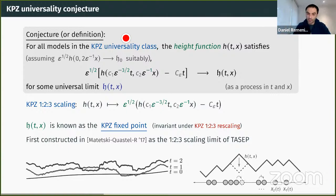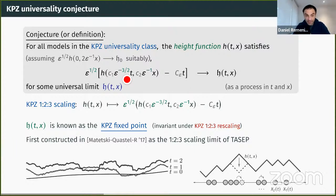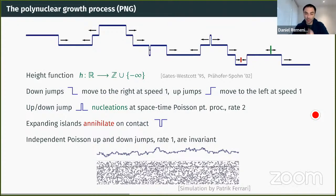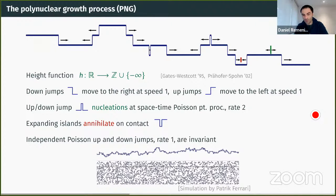Instead of discussing TASEP, I'll use the polynuclear growth (PNG) process, which I'm about to describe. This is work about to be posted. The reason for using PNG is that the formulas and derivation are much simpler than for TASEP, making it a much easier way to introduce the ideas behind this construction.